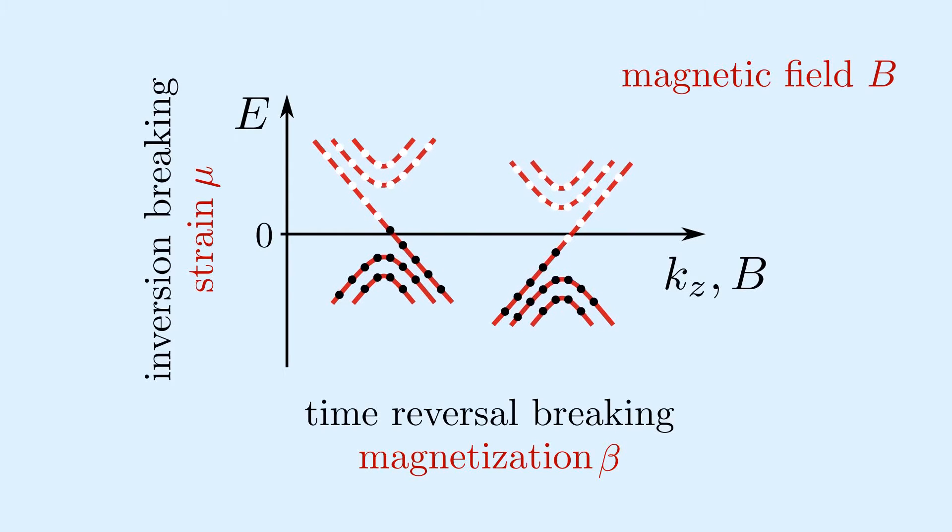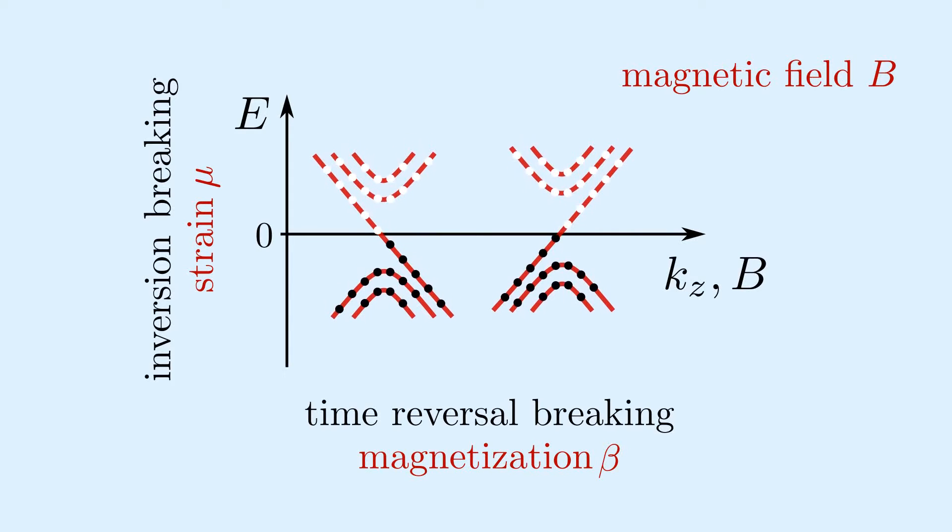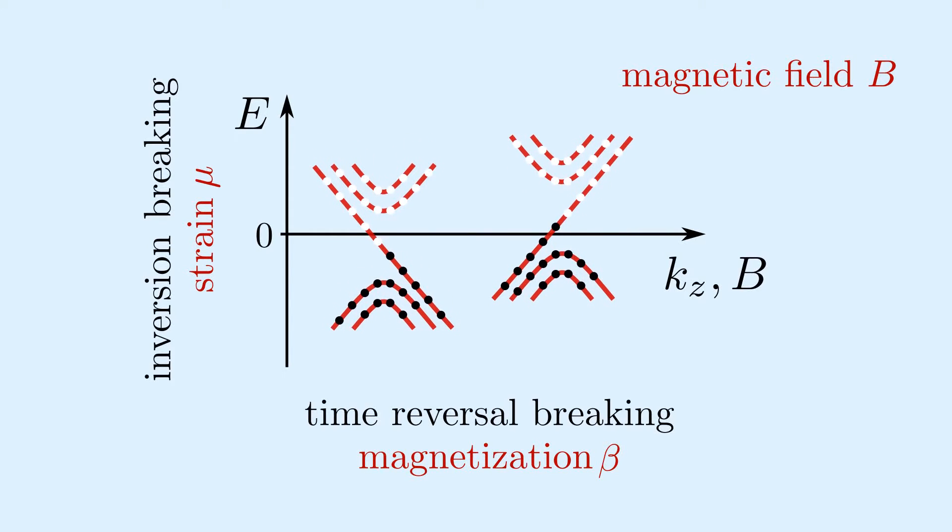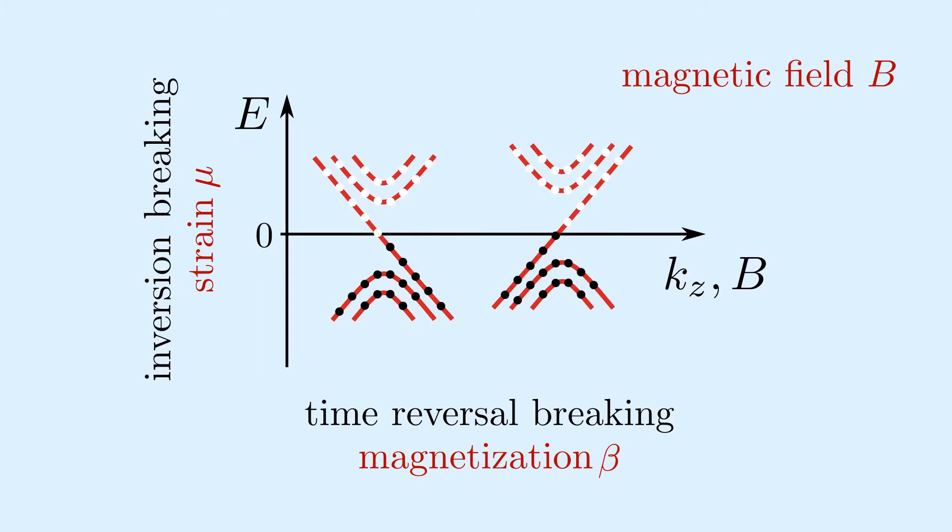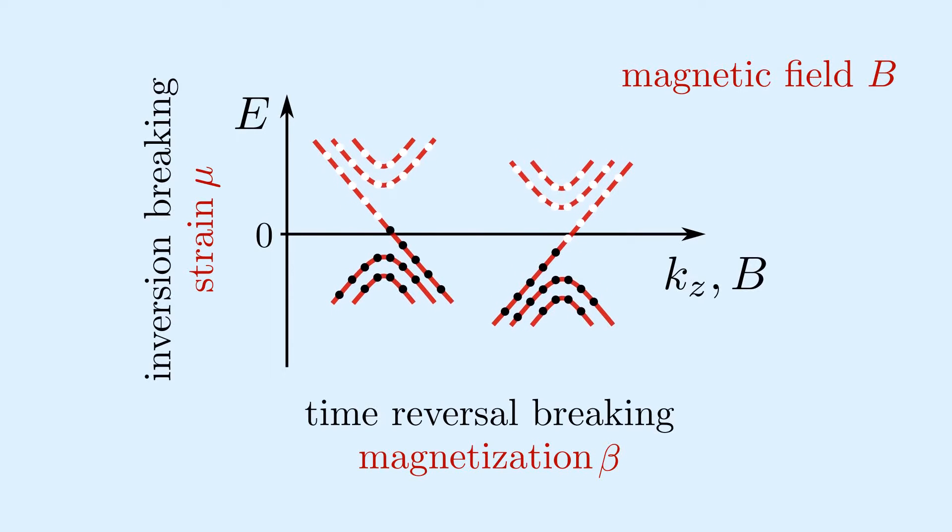If however we apply an oscillating strain, shifting the Weyl cone in energy fast enough to overcome relaxation, then we will get an oscillating current, which is the chiral magnetic effect.